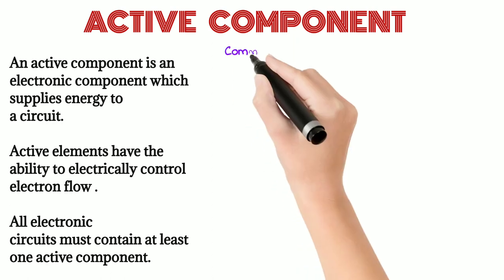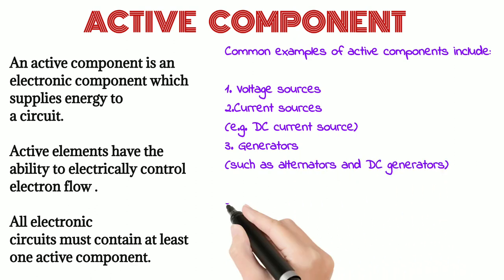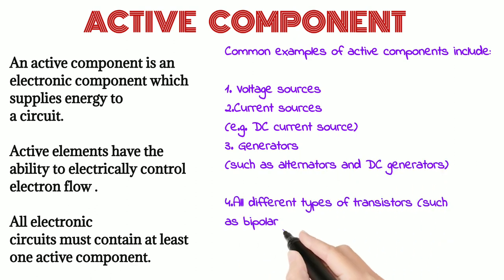Common examples of active components include voltage sources, current sources, DC current source, generators such as alternators and DC generators, all different types of transistors such as bipolar junction transistors, MOSFETs, FETs, and JFETs, diodes such as Zener diodes, photodiodes, Schottky diodes, and LED.